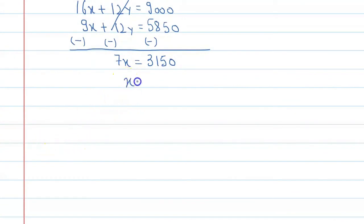Now x equals 3150 divided by 7. If we cancel this, the amount will be 450. So the cost of one table is 450 rupees.